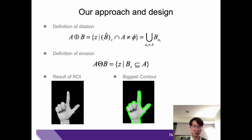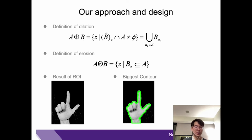Here is the definition formula of dilation and erosion. The two pictures at the bottom show the results: on the left is the result of the ROI, and on the right is the biggest contour. The green line describes the biggest contour of the ROI.